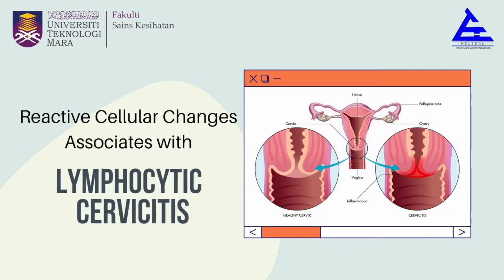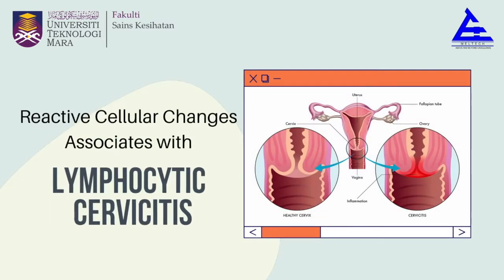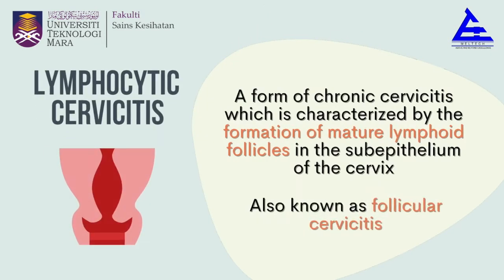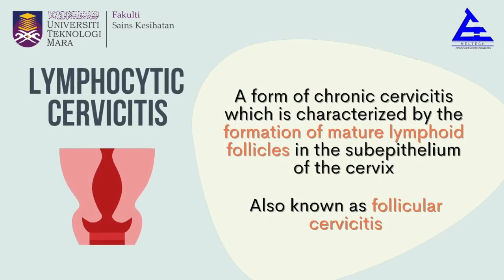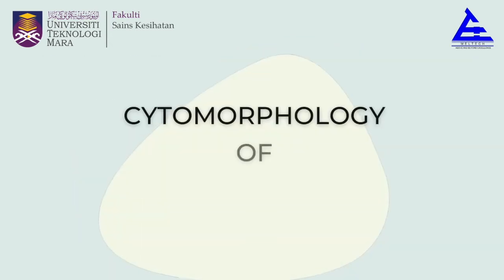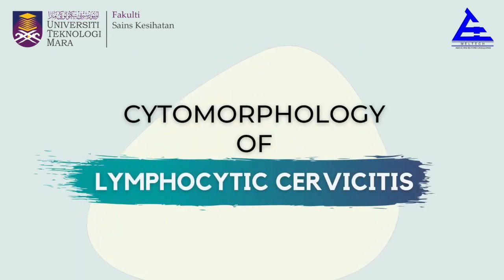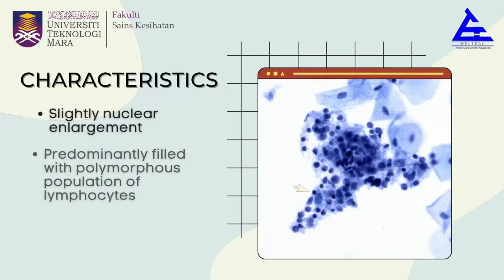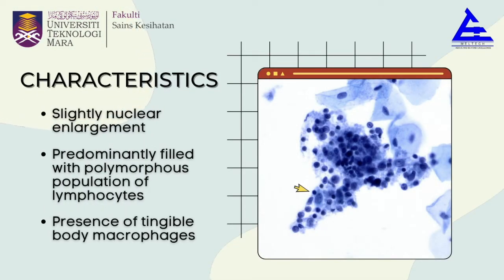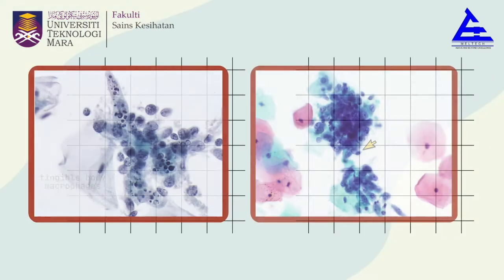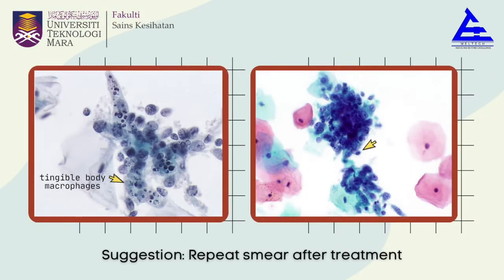Reactive cellular changes associated with lymphocytic cervicitis: lymphocytic cervicitis is a form of chronic cervicitis characterized by the formation of mature lymphoid follicles in the sub-epithelium of the cervix, also known as follicular cervicitis. Characteristics include slightly nuclear enlargement, background predominantly filled with lymphocytes, and the presence of tingible body macrophages. The suggestion for this diagnosis is repeat smear after treatment.